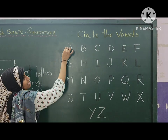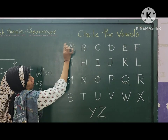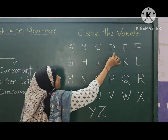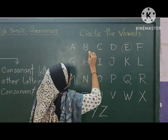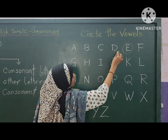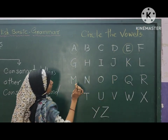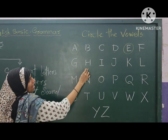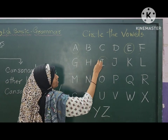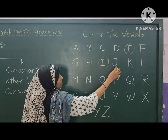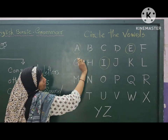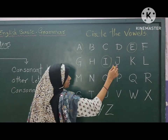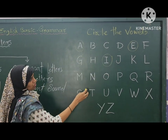You know that A is the vowel, E is the vowel, and the other letters are consonants. Fine? G, H — here I is the vowel, J, K, and all the rest of the letters are consonants.